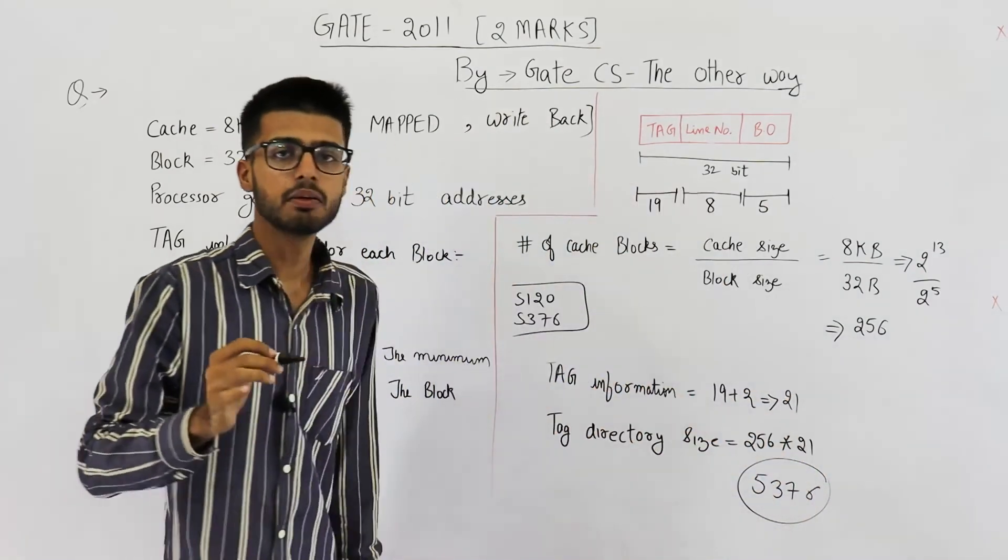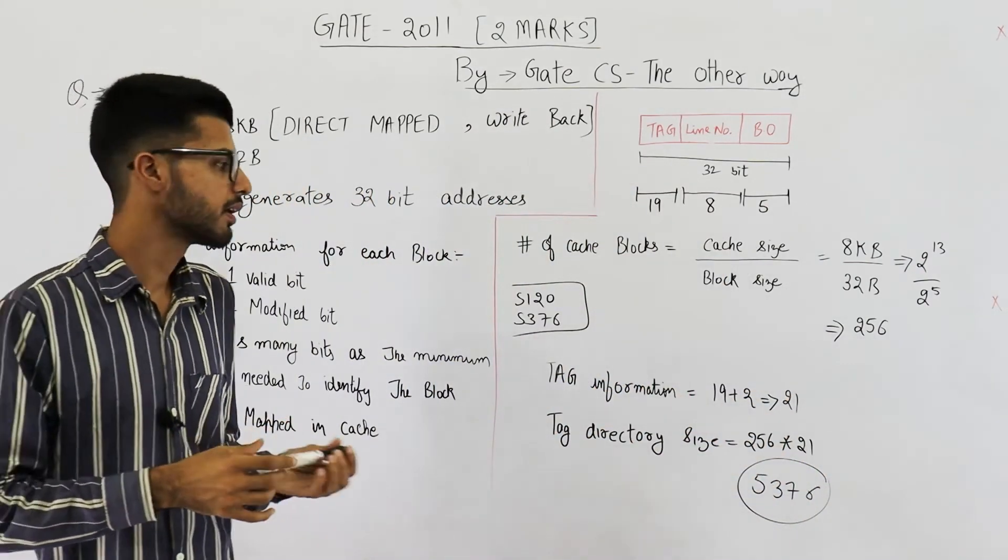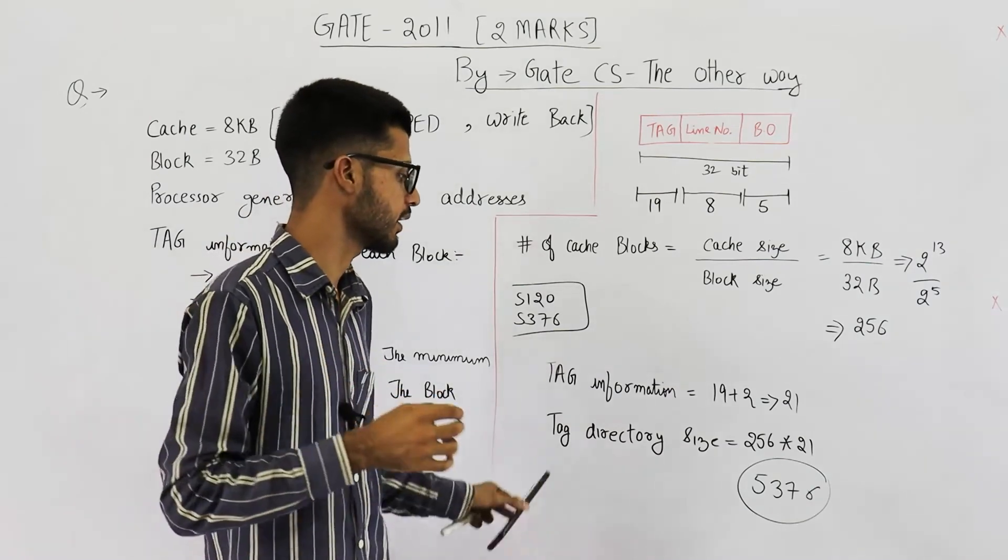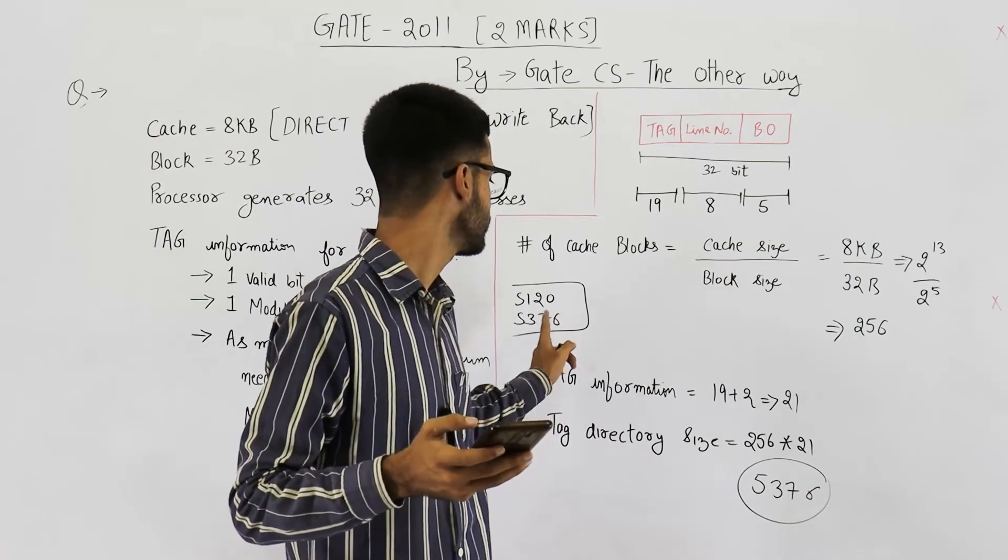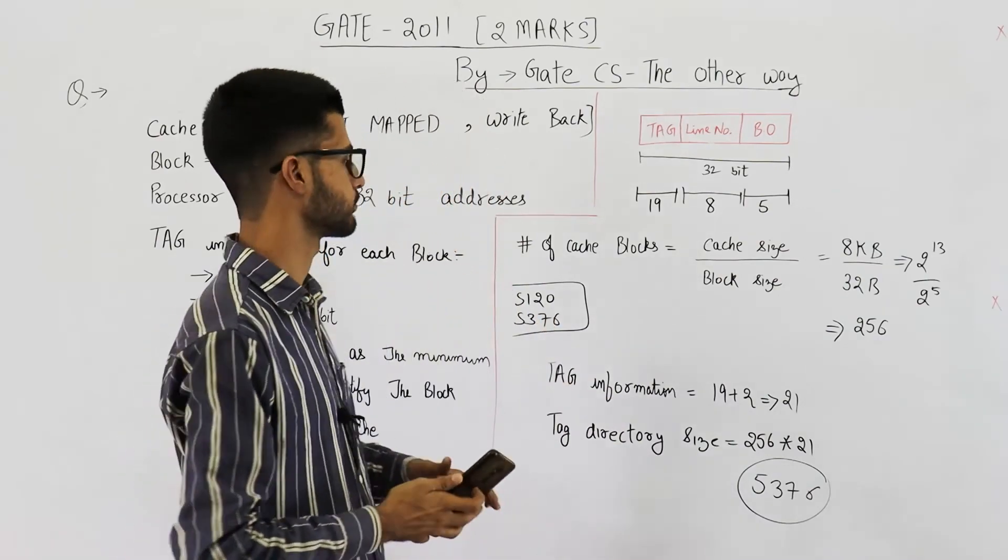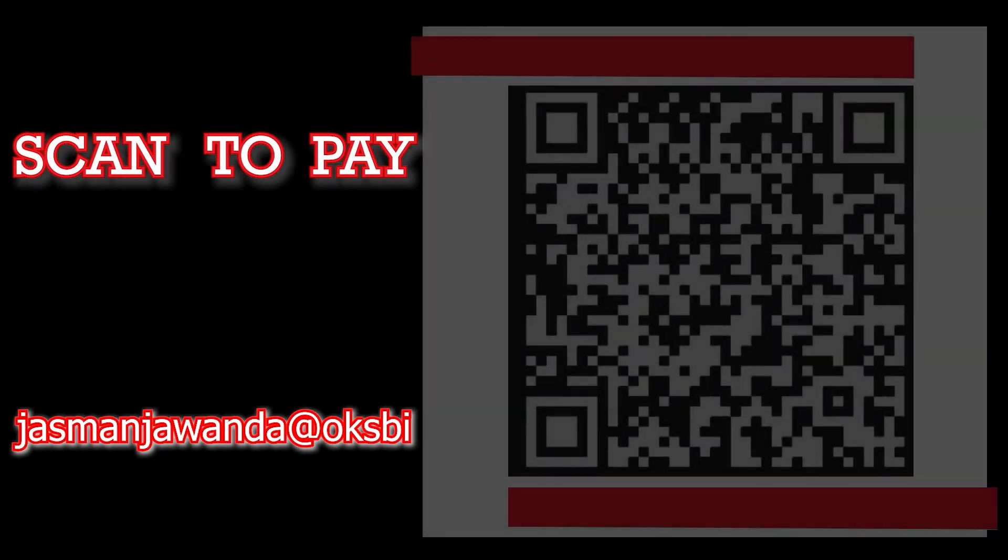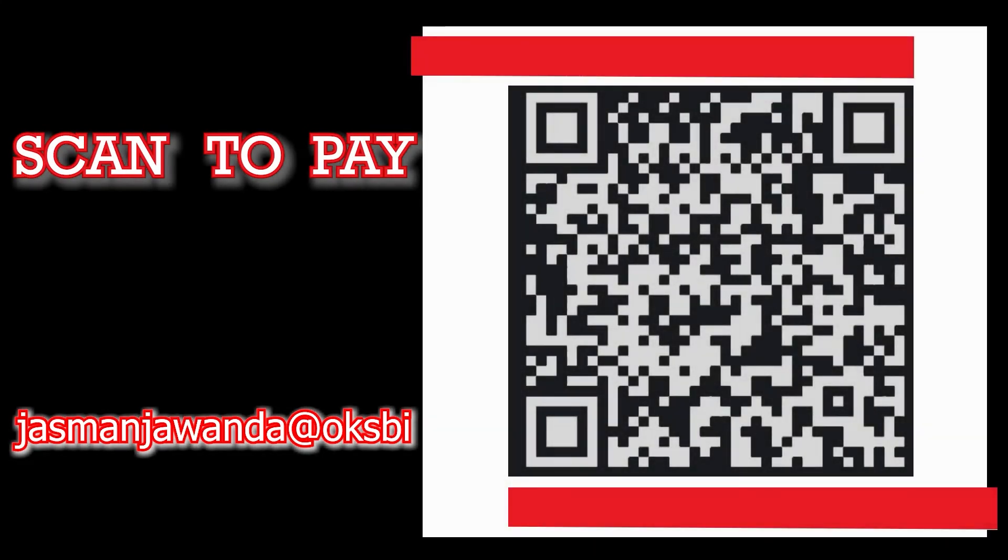These many bits of data will be required in tag directory. So yeah, that's correct. Option D 5376.